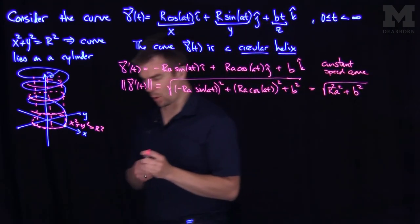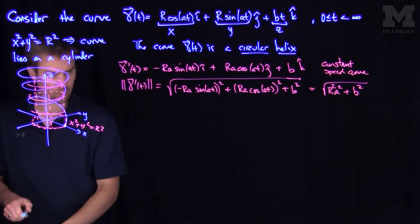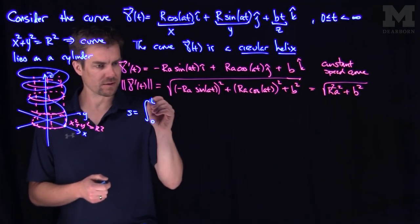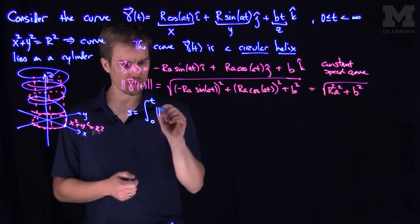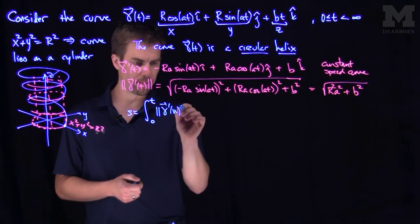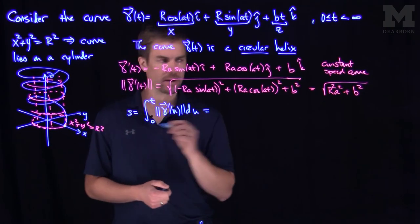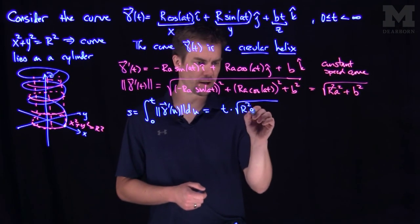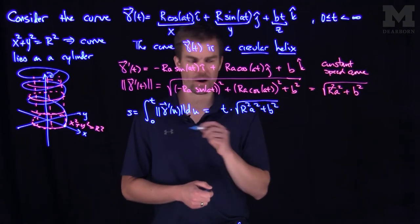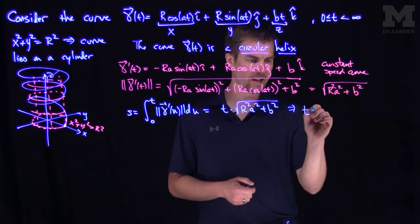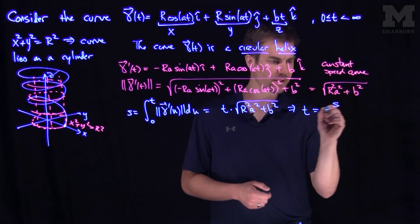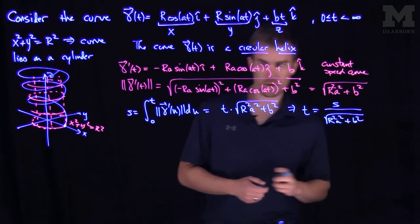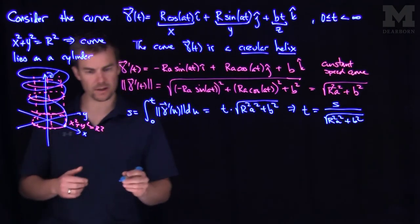To put it into arc length parameter, the arc length s is the integral from 0 to t of the speed |gamma prime of u| du. This simplifies to t times the square root of r²a² plus b². Therefore t equals s divided by the square root of r²a² plus b².